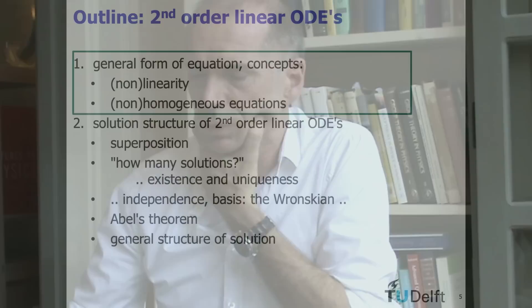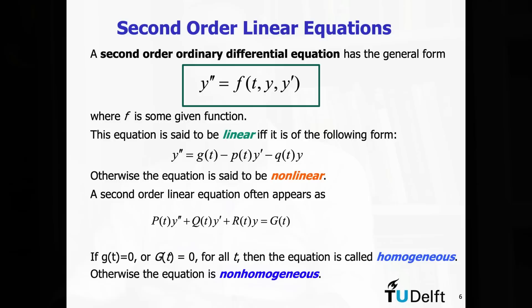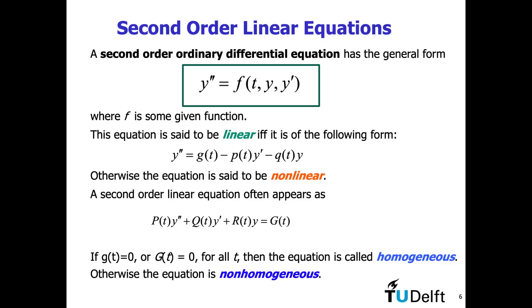What does a second-order differential equation look like? A second-order ordinary differential equation has the general form shown in the green box. It involves the second-order derivative y-double-prime on the left-hand side, and on the right-hand side there is a general function f that is a function of the independent variable t, the variable y, and could also be a function of the first-order derivative of y. That is very general, and as was the case in first-order differential equations, this is such a general concept that there is no general solution method for second-order differential equations in general.